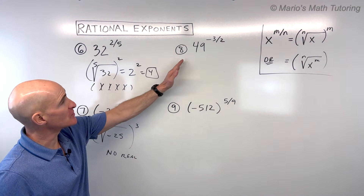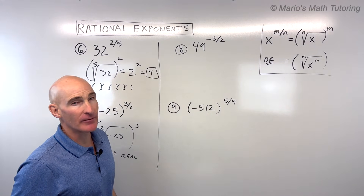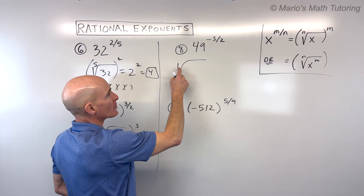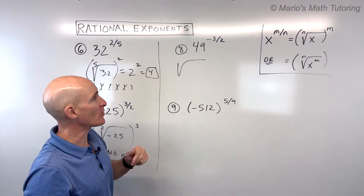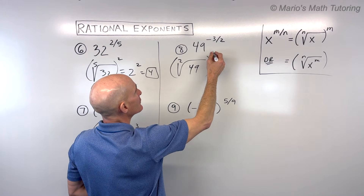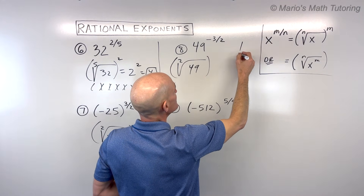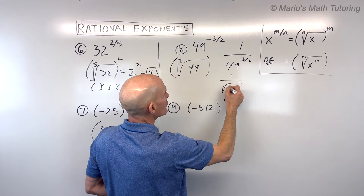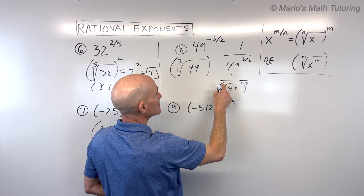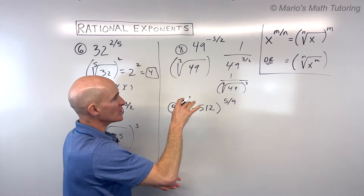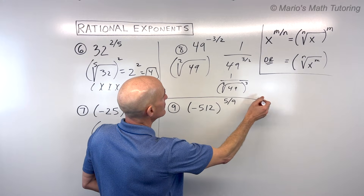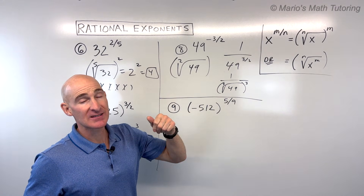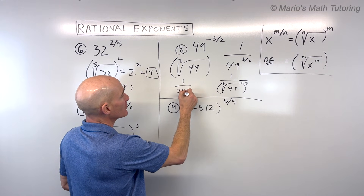For number 8, we have 49 to the negative three-halves power. The denominator is the root — so this is the square root — and we raise it to the negative third power. One approach is to take the reciprocal right at the beginning: this becomes 1 over 49 to the three-halves. The square root of 49 is 7, and 7 cubed is 343, so the answer is 1 over 343.